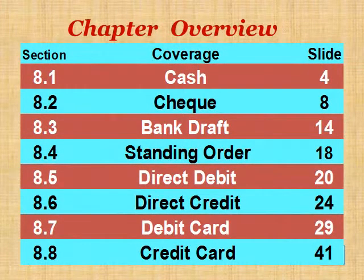Chapter Overview: 8.1 Cash is on slide 4. 8.2 Cheque is on slide 8. 8.3 Bank Draft is on slide 14. 8.4 Standing Order is on slide 18. 8.5 Direct Debit is on slide 20. 8.6 Direct Credit is on slide 24. 8.7 Debit Card is on slide 29. 8.8 Credit Card is on slide 41.